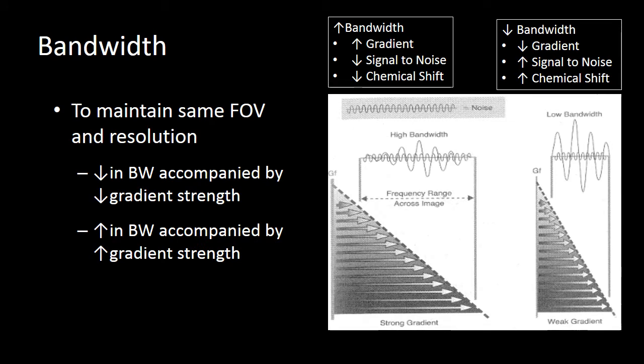When we try to practically think about how bandwidth impacts our image with relation to our gradient strength, the scanners now generally compensate for changes in bandwidth by altering our gradient strength. So if we go to the scanner and we say we want to decrease our bandwidth, the scanner tends to decrease the gradient strength in order to maintain the same field of view resolution.